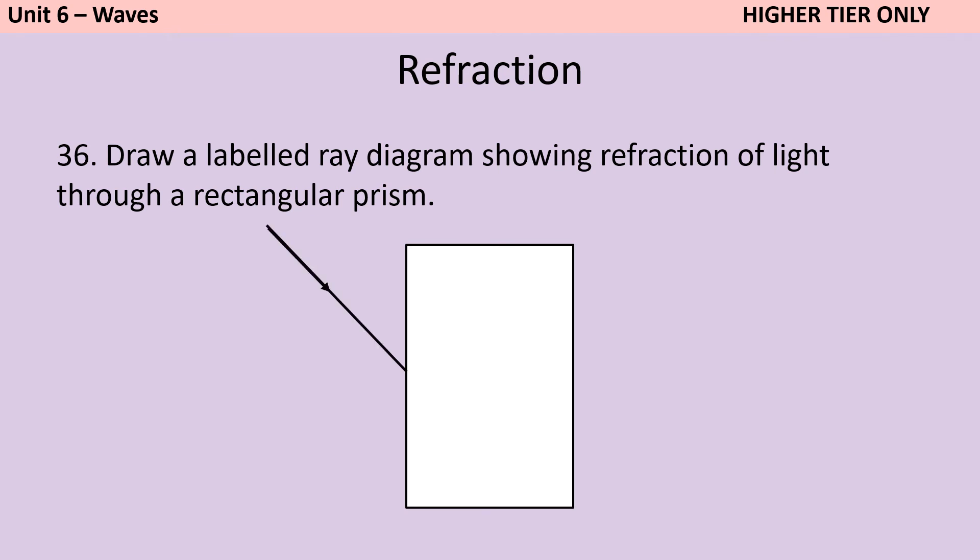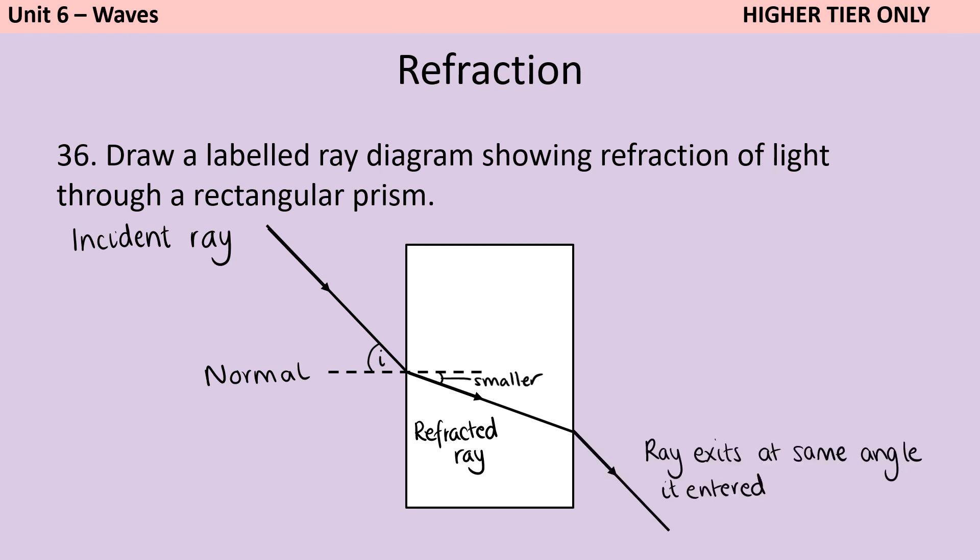Here's my glass or perspex block and my incident ray going into it. The normal is still drawn at 90 degrees compared to the angle that's being hit. And again, the angle of incidence goes between the incident ray and the normal. Then we have our refracted ray. Now, because the glass block is more dense than the air that the ray has come from, the ray is going to refract towards the normal. So that means that my angle of refraction, which is between the refracted ray and the normal, is smaller than my angle of incidence was. And then because this is a rectangular block, when it refracts out the other side, it's going to exit at exactly the same angle at which it entered.